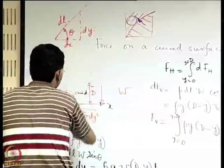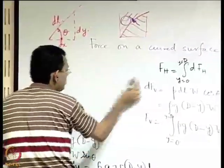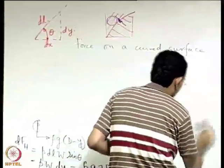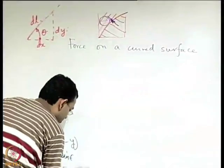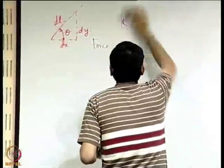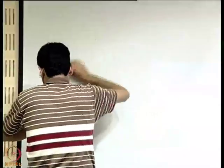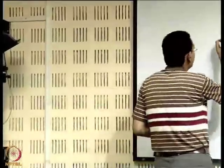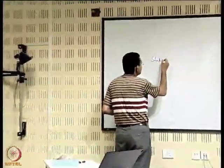We have now considered force components on plane and curved surfaces and seen simple ways to evaluate them. We assumed the surface remains in equilibrium when placed in the fluid. If a slight tilt occurs for any reason, the equilibrium may be disturbed — so we must now understand the concept of stability of floating and submerged bodies.